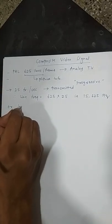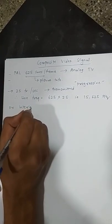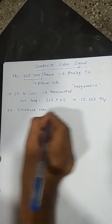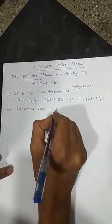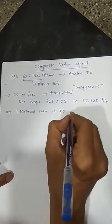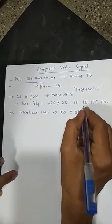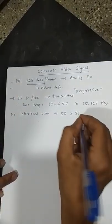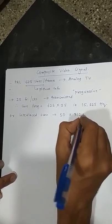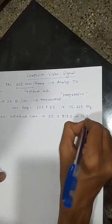In case of interlaced scan, the calculation is 50 frames into half of number of lines. That means 625 divided by 2, 312.5, which again comes out to be same number.